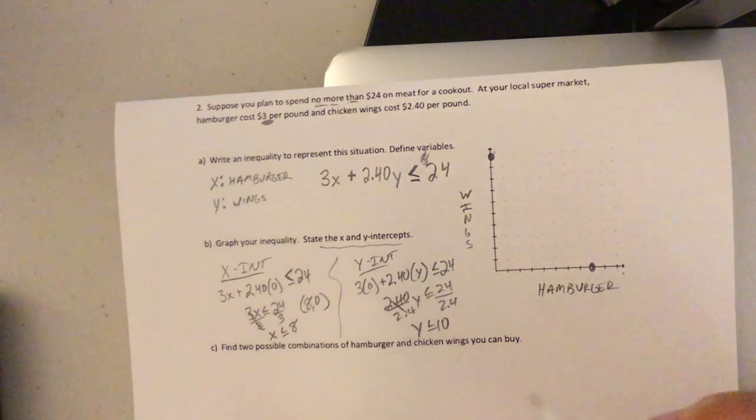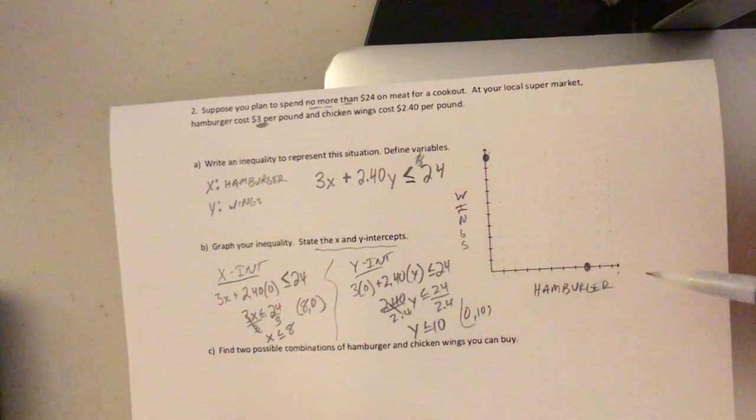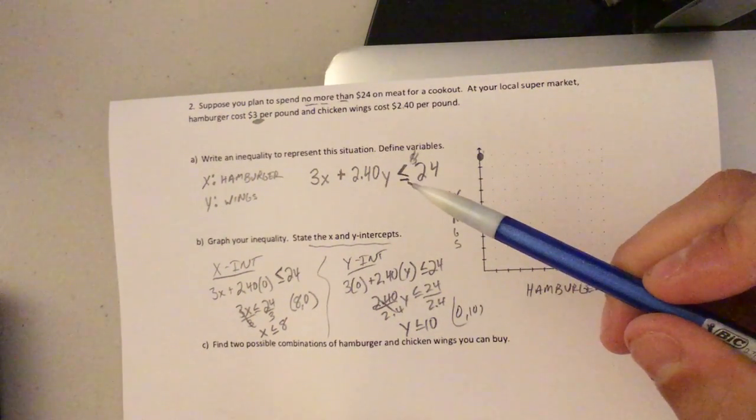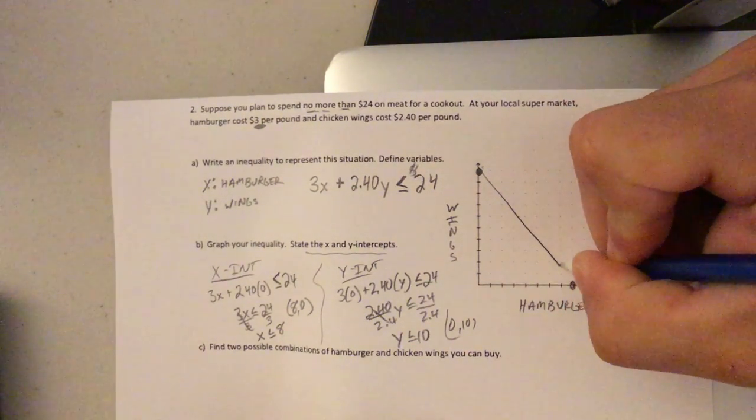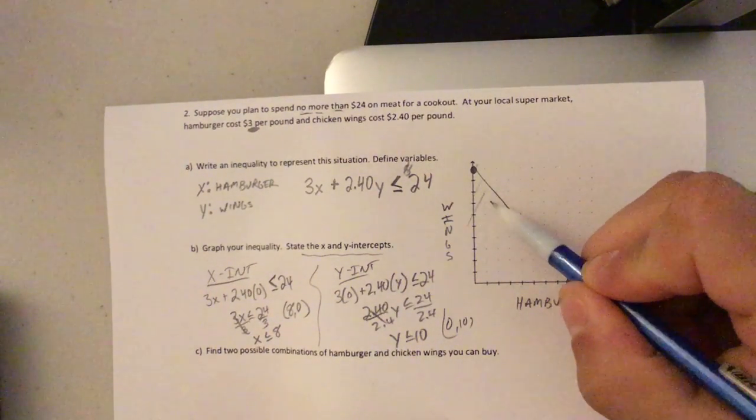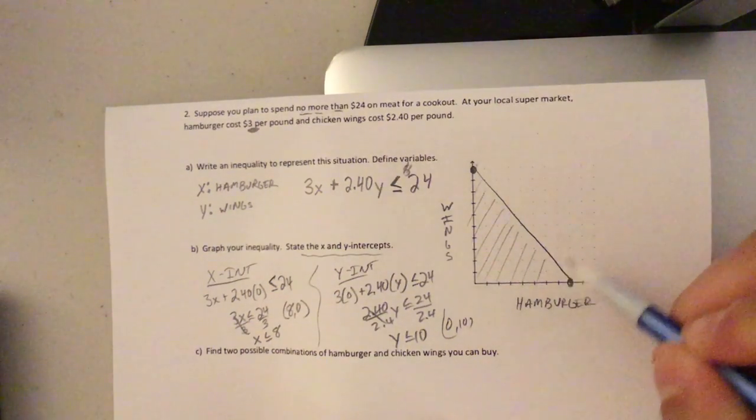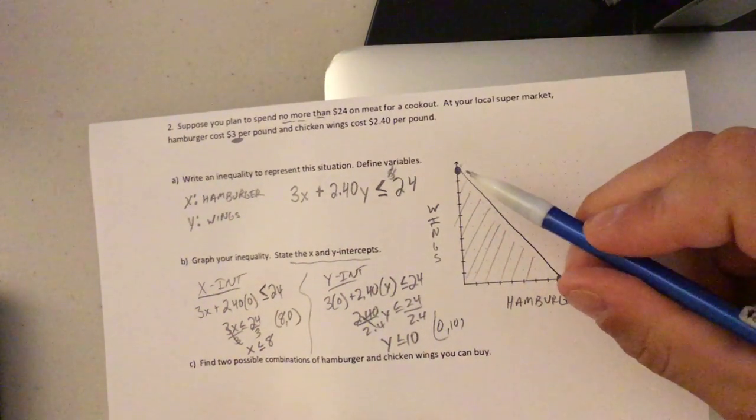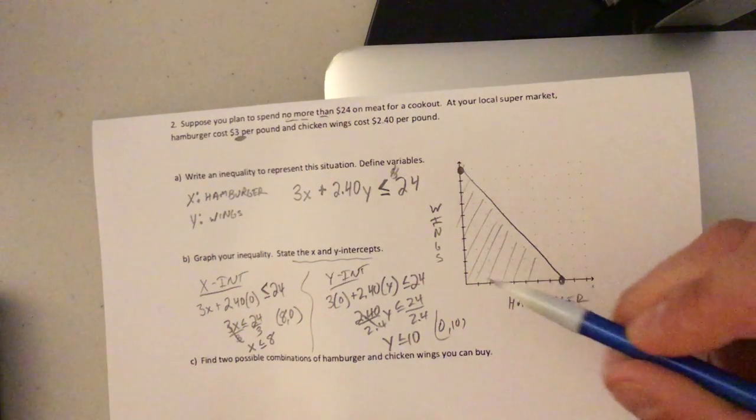We need to find, oh, that reminds me, zero comma 10. We need to determine what kind of line is it? Well, or equal to means it's going to be solid. And we're going to shade below that line. So a solution can be any point on that line. A solution could also be any point in here.